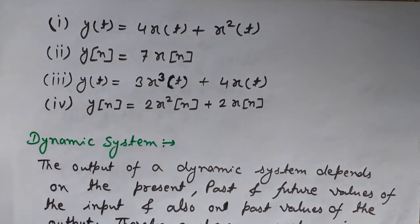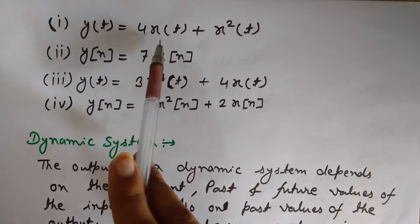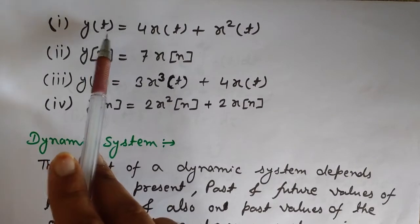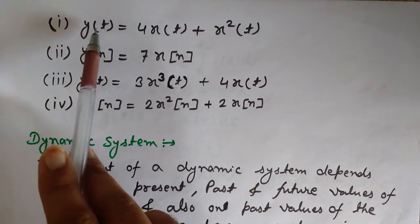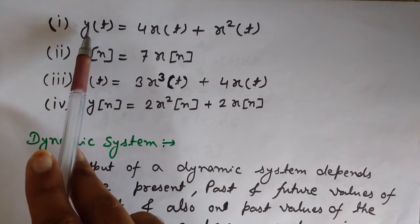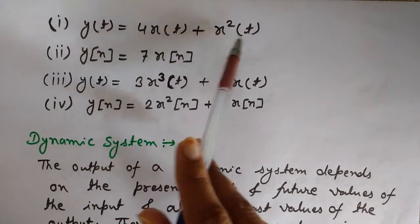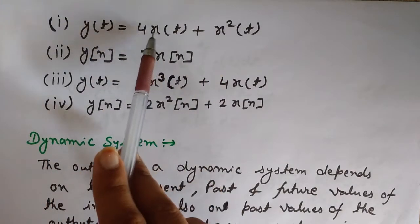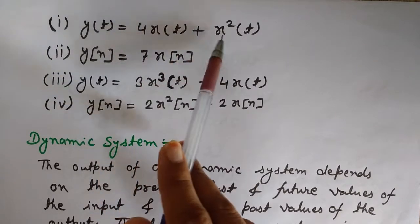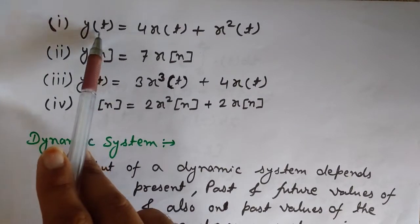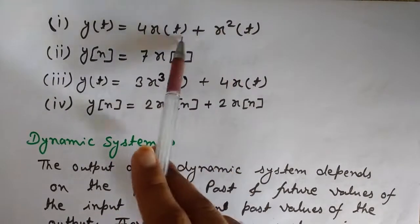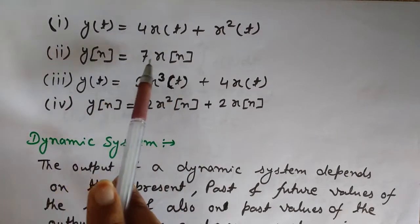Here are a few examples of instantaneous systems. The first example is y(t) = 4x(t) + x²(t). To check whether it is an instantaneous system, substitute a value of t — say t = 2. Then y(2) = 4x(2) + x²(2), meaning the output at t = 2 depends only on the input at t = 2. So the output at any instant depends only on the input values at that same instant.